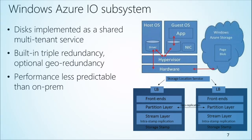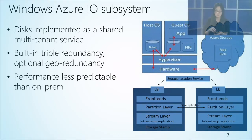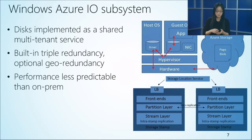When talking about Windows Azure IO, it's important to understand the architecture. Different from on-premise where directly attached disks have very low latency, here it's all network-connected storage. In your guest OS, when you write IO it doesn't go through the NIC — it goes through the hypervisor and then shares the host OS network. Every write, every piece of data, is actually triple redundant — already built into the Windows Azure backend storage. So it's always a trade-off between high availability, data redundancy, and performance.